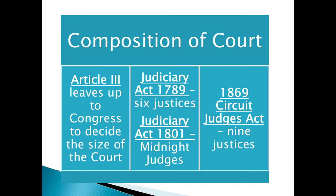Later on, this act was overturned. In 1869, we get the Circuit Judges Act, which officially established the Supreme Court at nine justices — and that's what we have to this day.